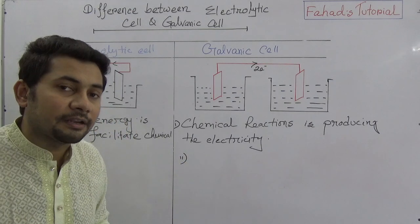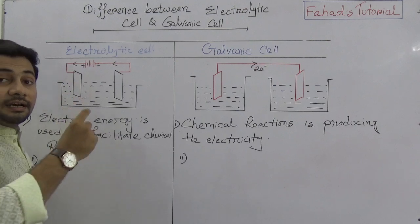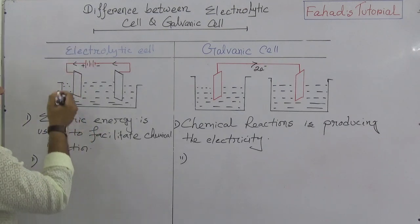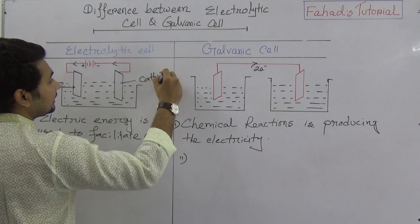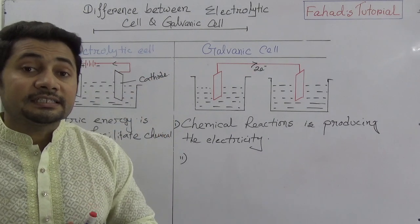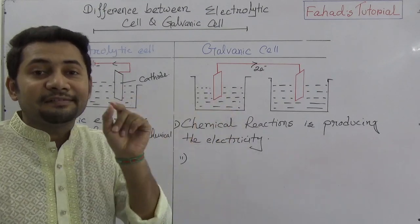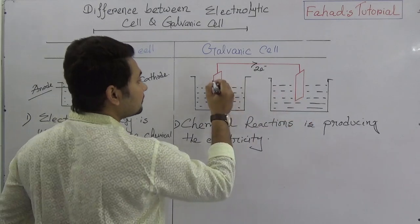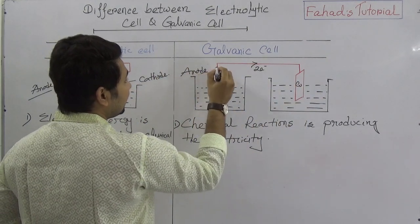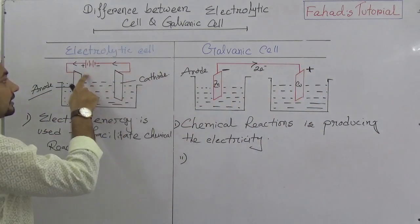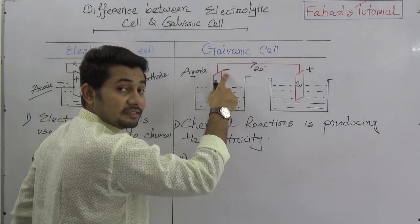The second difference concerns the anode and cathode. In the electrolytic cell, the positive part of the external electric source is attached to the electrode that becomes the anode. So in the electrolytic cell, the positive part which is attached to the electrode is the anode. But in the galvanic cell, the negative side of the electrode would be the anode — here this is zinc, and this is copper.